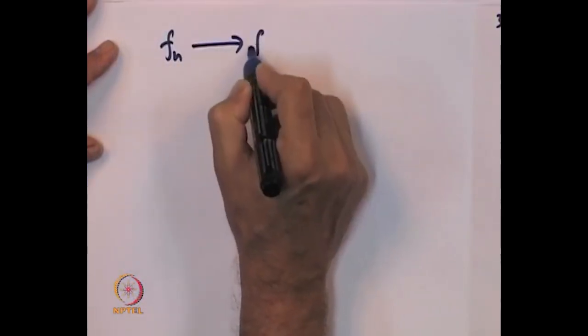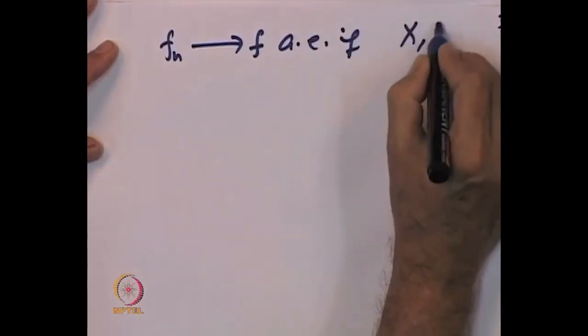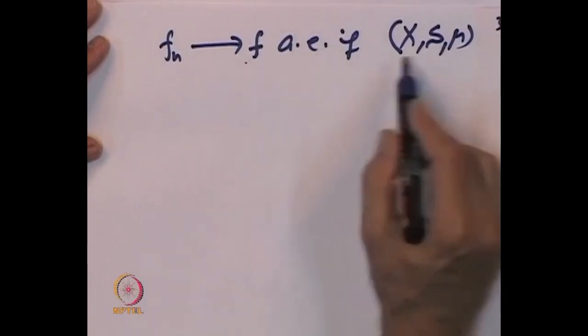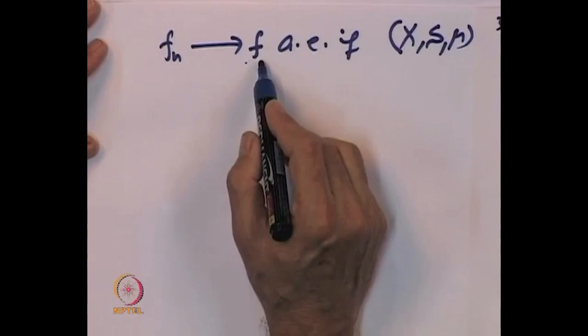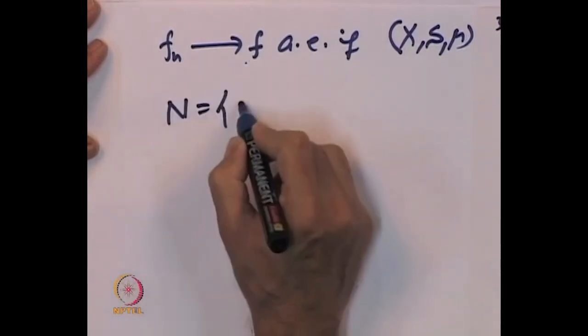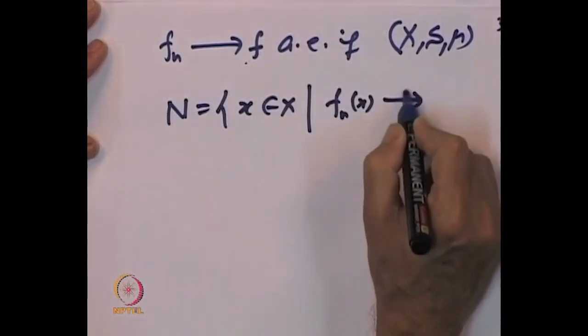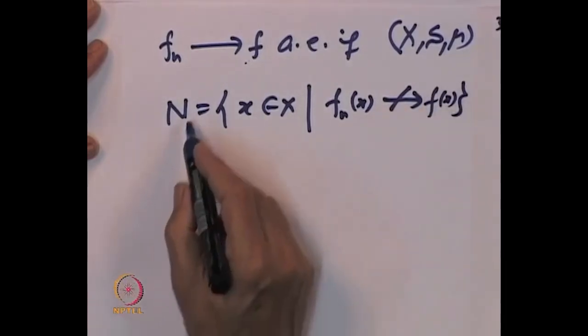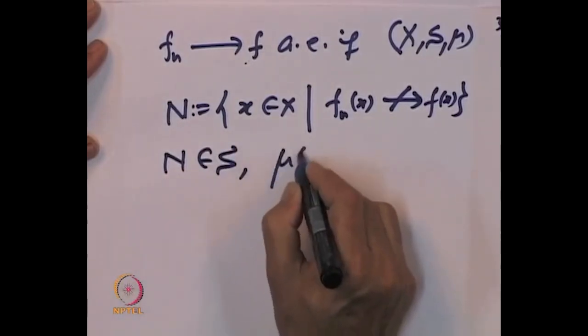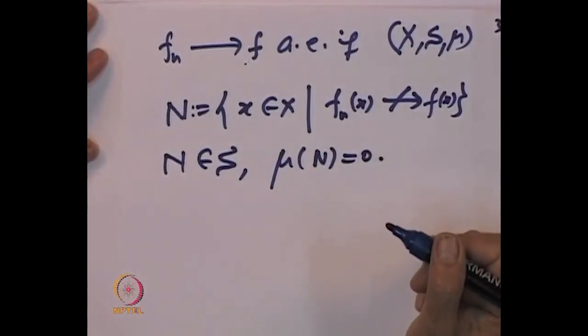But we are going to look at functions defined not only on measurable spaces but on measure spaces. So we look at a sequence F_n of measurable functions on a measure space (X, S, μ). We had already looked at a concept called convergence almost everywhere. Let us define formally again: F_n converges to F almost everywhere if the set N of all x in X such that F_n(x) does not converge to F(x) belongs to the sigma algebra S and μ(N) = 0. That is convergence almost everywhere.